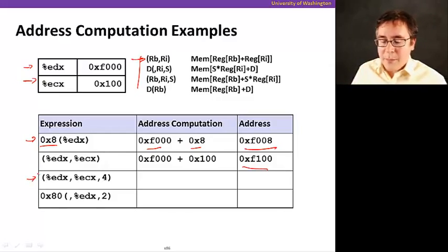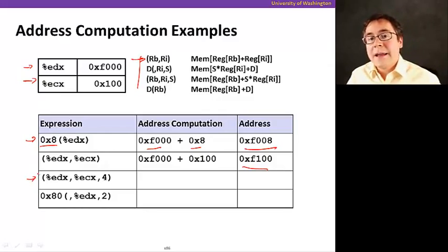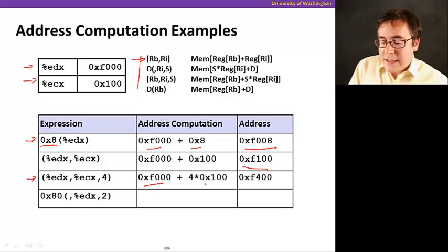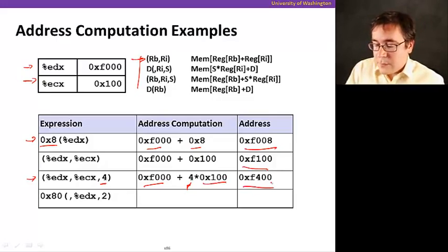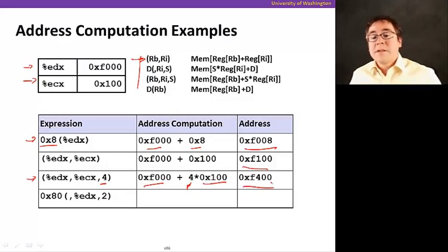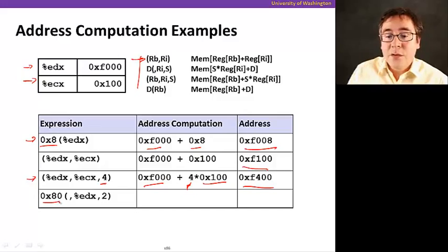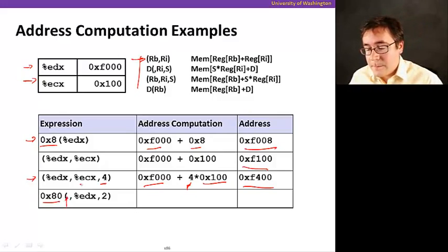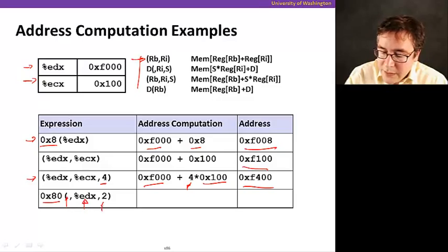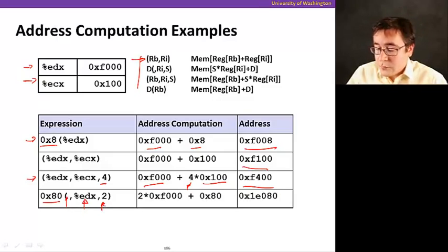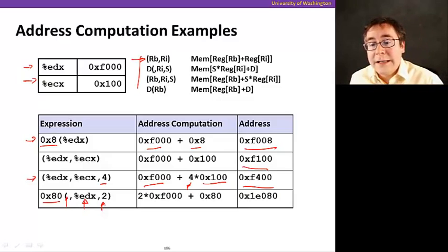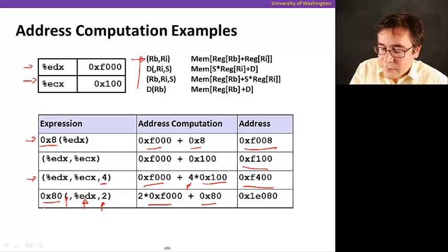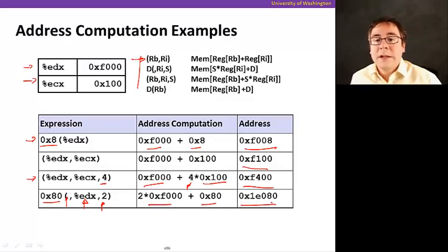Now, the third example here is using a scale factor. So, and what it's going to do is it's going to get EDX and added to four times, because we had four here, ECX, which is 100. So, in the end, we get F400. So, now, the final example here is D is set to 0x80. We do not have RB, so RB is empty. But we have RI and we have a scale too. So, what is this going to do? Well, it's going to do two times the contents of EDX. That's here. Add it with the displacement, and we get the final address, 1E080.